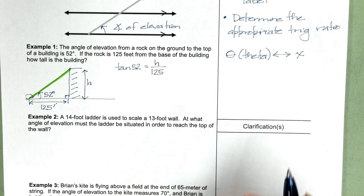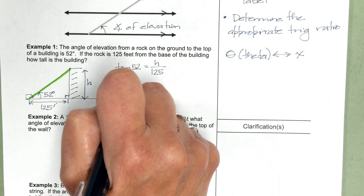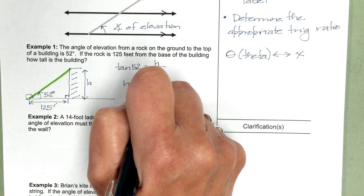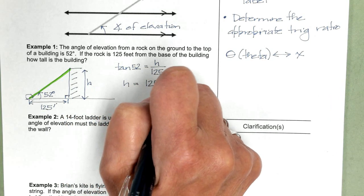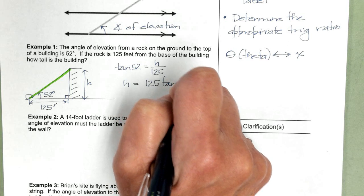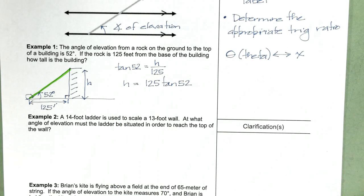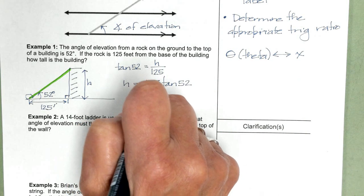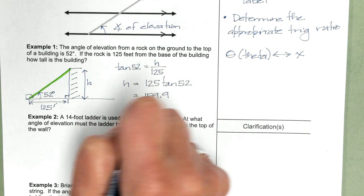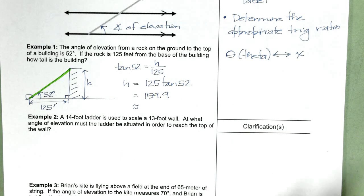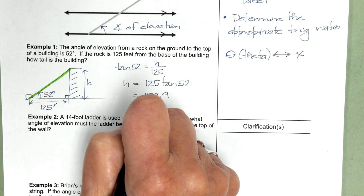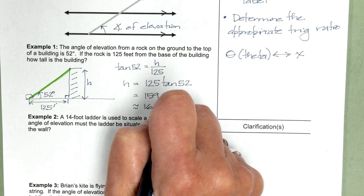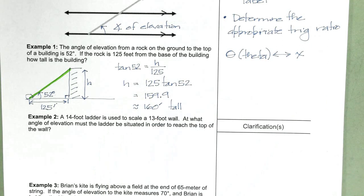To solve for H, we multiply both sides by 125. And we get H equals 125 times tangent of 52. Plug that in your calculator and you get 159.9. So if we were rounding this to the nearest foot, the building is 160 feet tall.